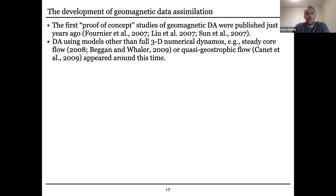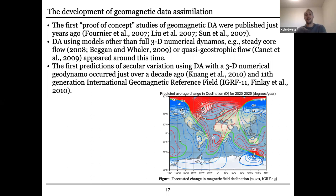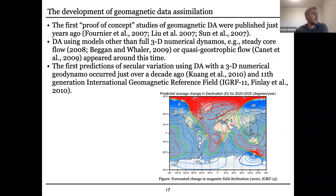Shortly after that, you started seeing data assimilation experiments, but with simplified versions of the dynamo — models using steady flow in the core and things like that. Then in 2010, that's when you first get a prediction of secular variation, the variation of the magnetic field, using a system where the assimilation system was a full self-consistent 3D dynamo model, like we discussed. So this was in 2010 and that prediction was actually used.